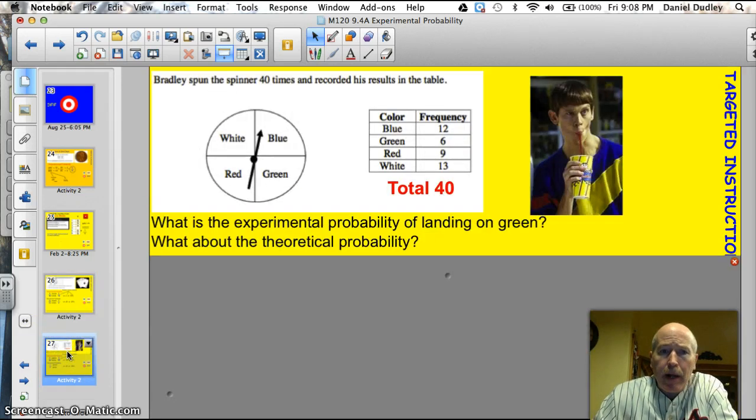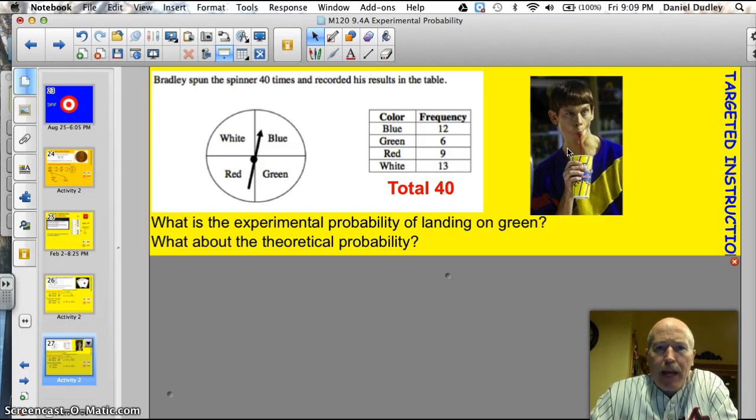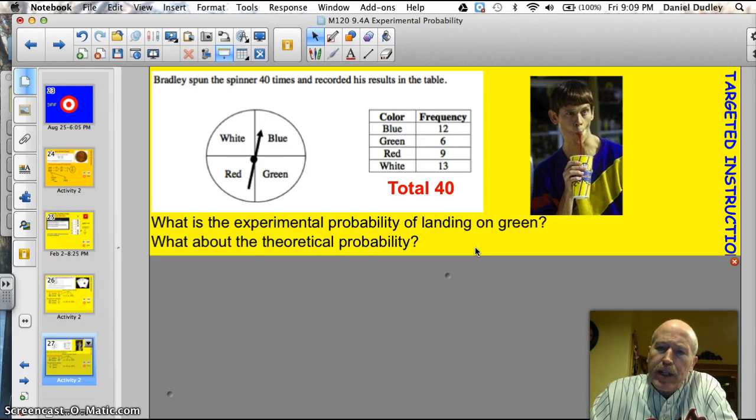All right, here's an example for you to try. Here's my friend, Bradley. Bradley spun this spinner 40 times, and he recorded his results in the table. So what was the experimental probability of landing on green? And what was the theoretical probability that that would happen? Go ahead, and you answer these two questions on your own.